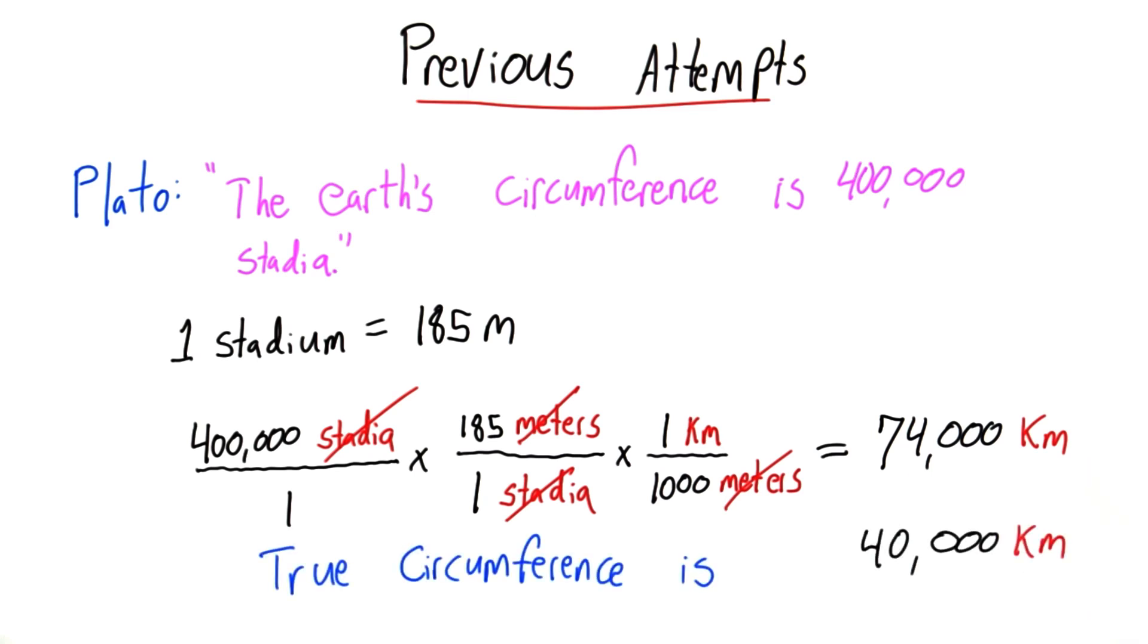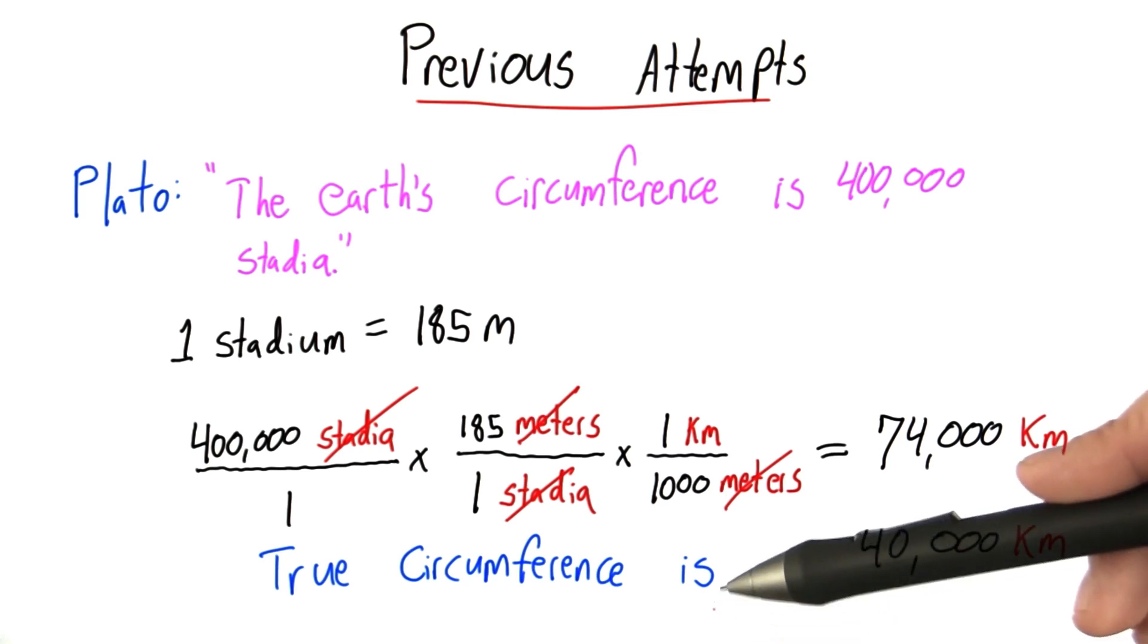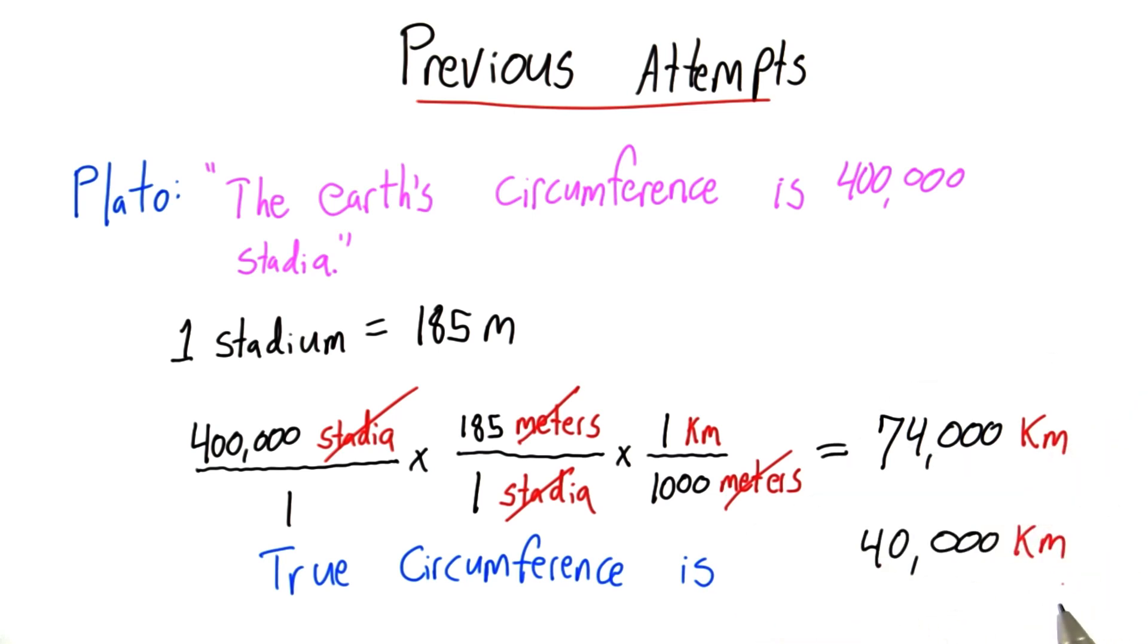Now, the true circumference, and this is the number you get if you type into a search engine the question what is the circumference of the earth, it's 40,000 kilometers. Plato was wrong, but how wrong was Plato? How far off was he?